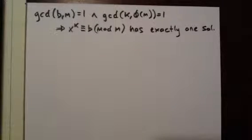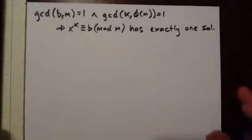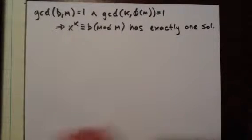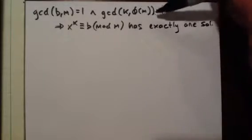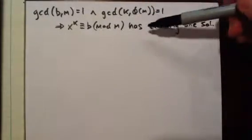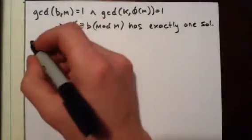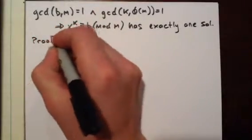Now we're going to prove the existence of kth roots mod m. In other words, if gcd(b,m) = 1 and gcd(k, φ(m)) = 1, then x^k ≡ b (mod m) has exactly one solution. Let's go ahead and prove this.